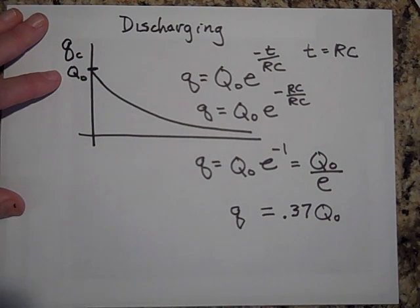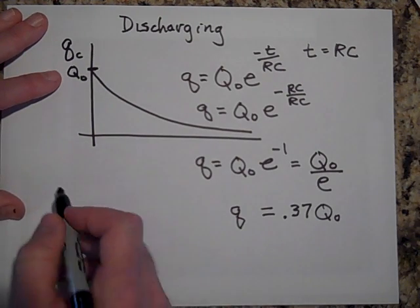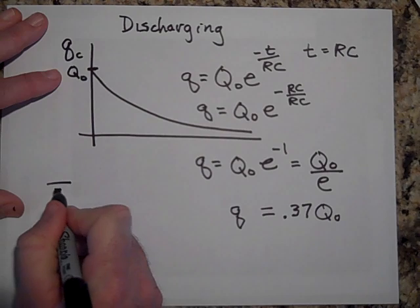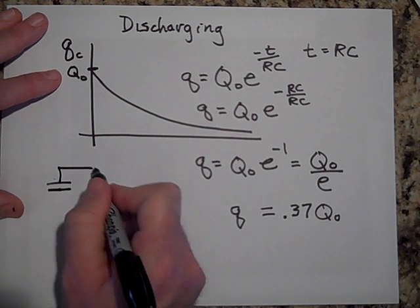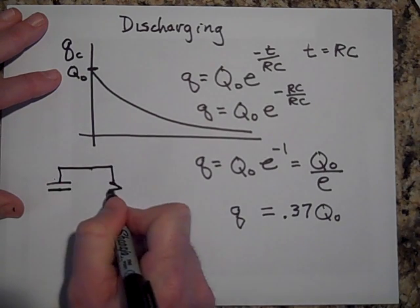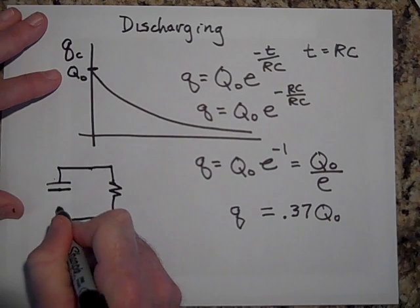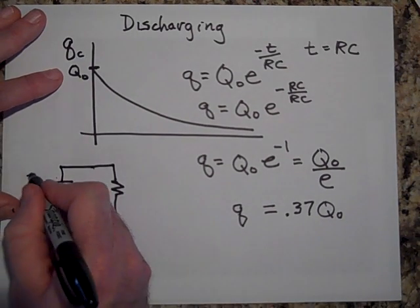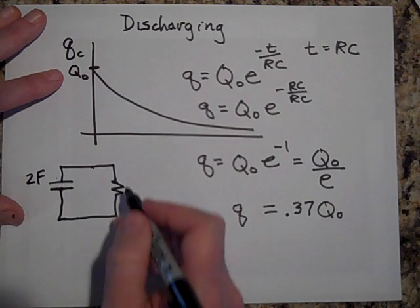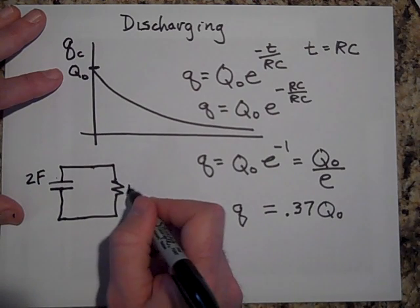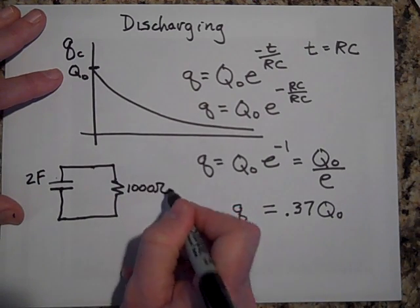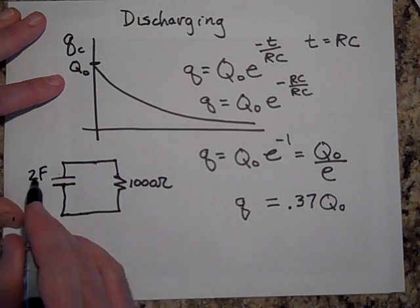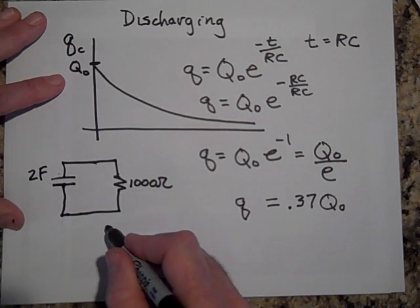Okay. So what that means is, let's say you have a circuit that looks like this. And let's say that this is 2 farads. That's a huge capacitance. And let's say this is 1,000 ohms. Just by multiplying these together.